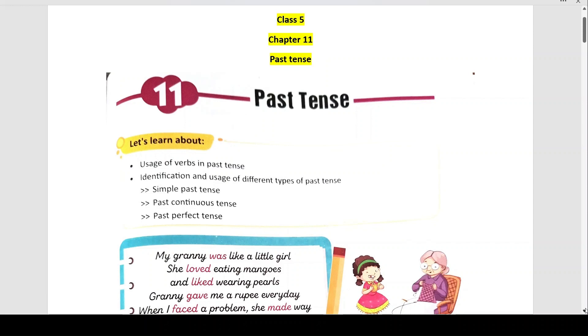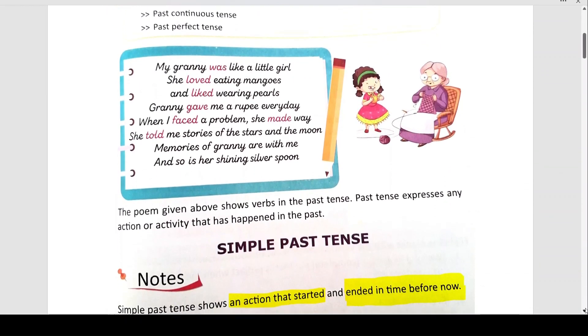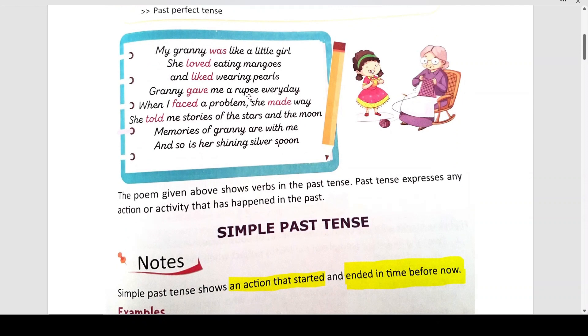Now read the passage which is given here. My granny was like a little girl, she loved eating mangoes and liked wearing pearls. Granny gave me a rupee every day, when I faced a problem she made way. She told me stories of the stars and the moon, memories of granny are with me and so is her shining silver spoon. Now all these highlighted words in red, can you know what is similar to all of them? They are all in past tense. These are all verbs, action words, they are all in past tense: was, loved, liked, gave, faced, made, and told.